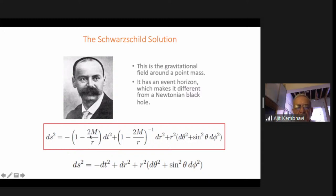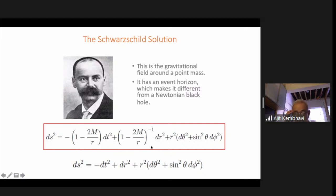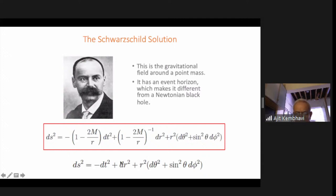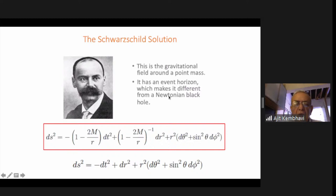The question is whether you have a singularity there. It turns out that the singularity at r equals 2M is simply a singularity of the coordinate system used — just like when you put r equals 0 in spherical polar coordinates, or problems at the poles. You can use different coordinate systems like the Eddington-Finkelstein coordinates where this singularity does not occur. Nevertheless, there is a physically very important thing which happens at r equals 2M, as we'll see. On the other hand, if r equals 0, there is a real physical singularity.